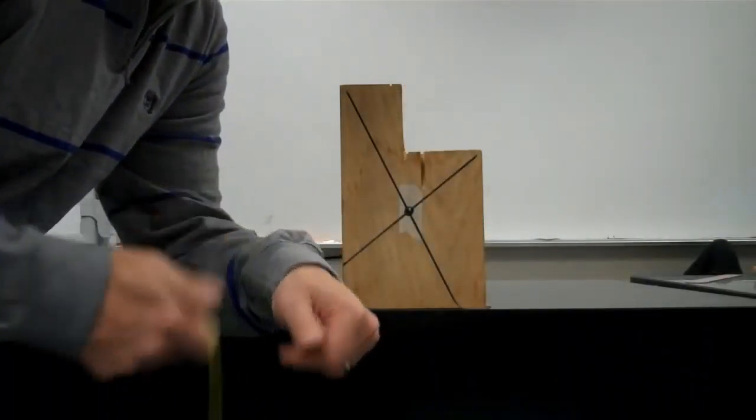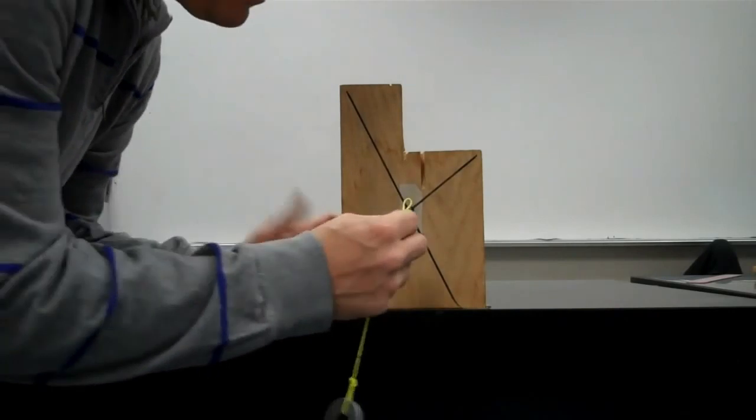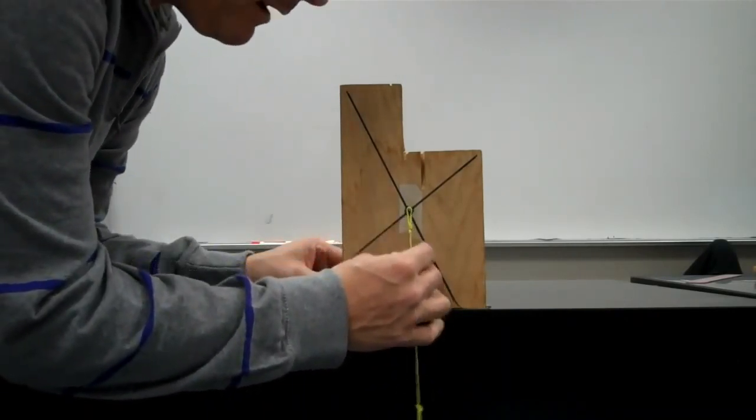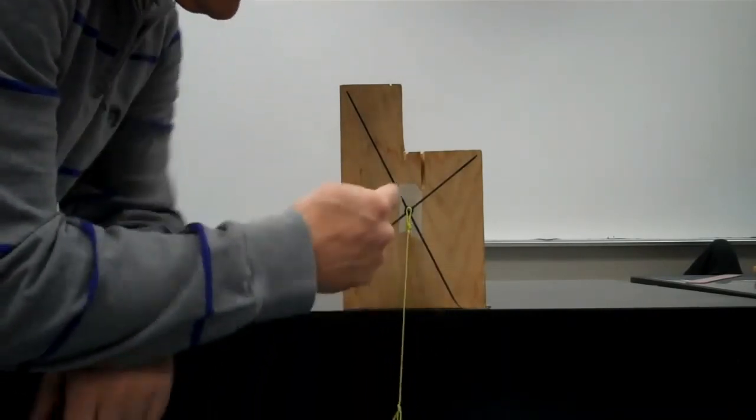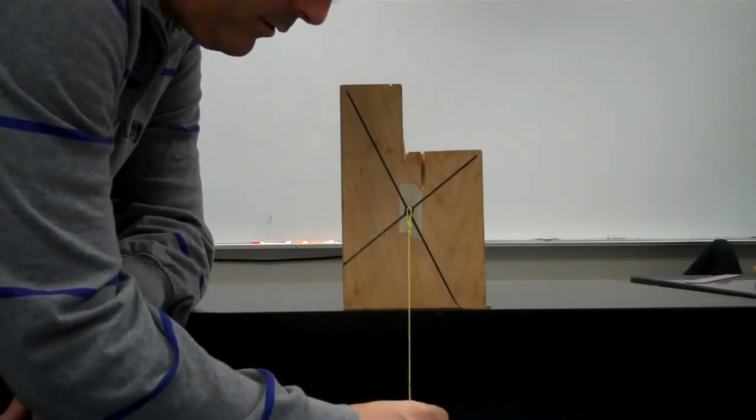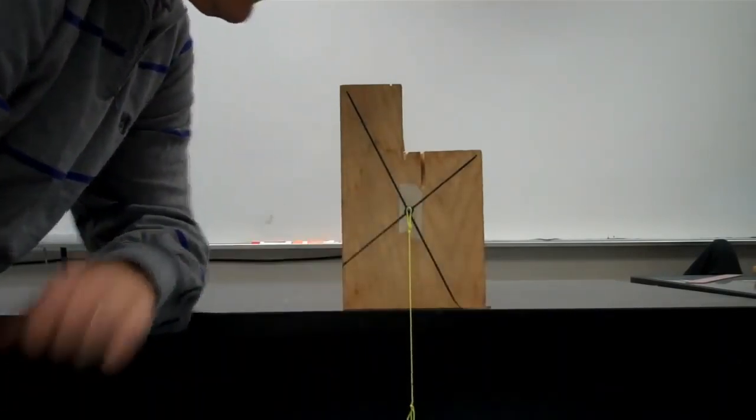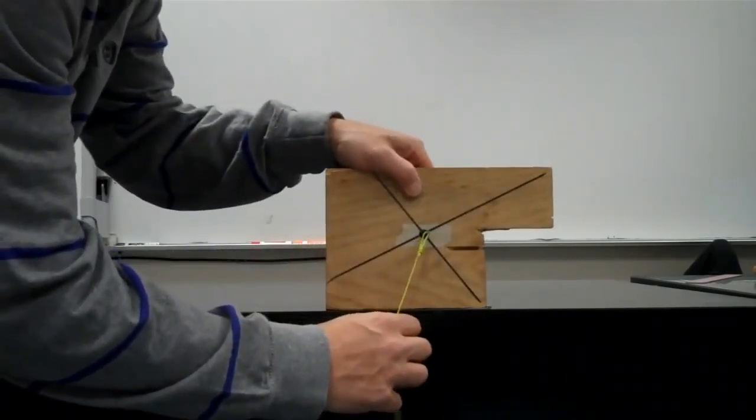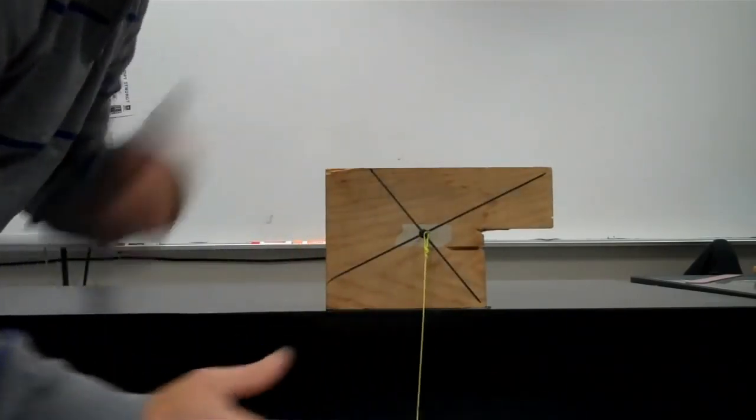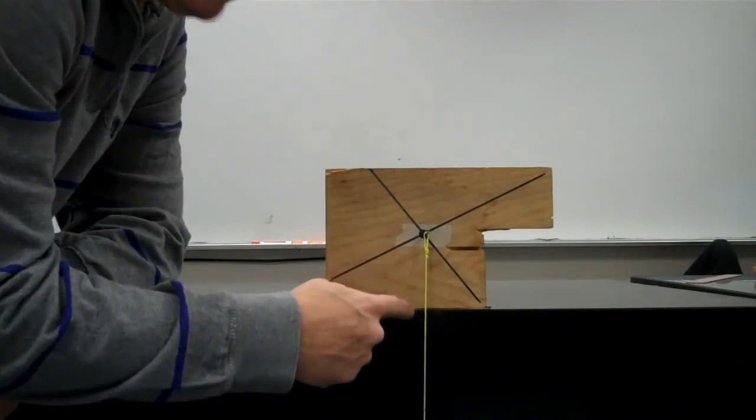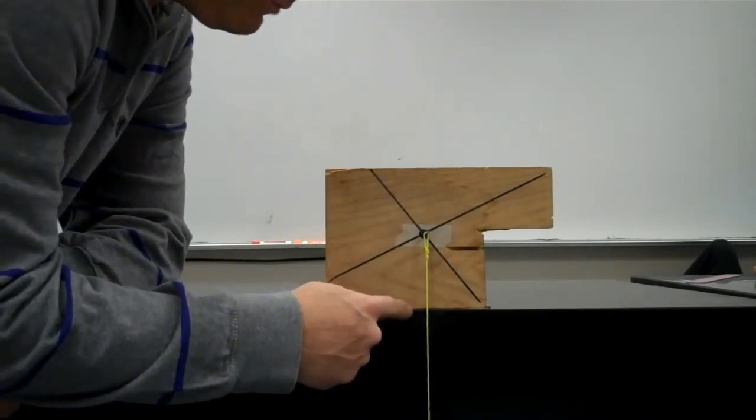Let's try the toppling experiment with the irregularly shaped block. I'll hang my plumb bob, and I know that the center of gravity now is above a point of support, and the block is stable. If I put it this way, again, the center of gravity is above a point of support, and the block is stable.